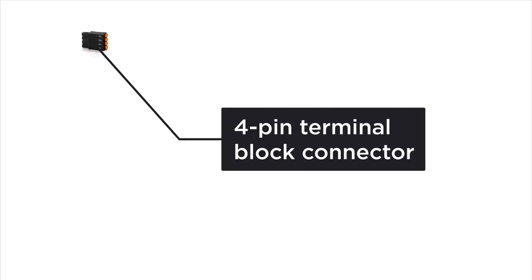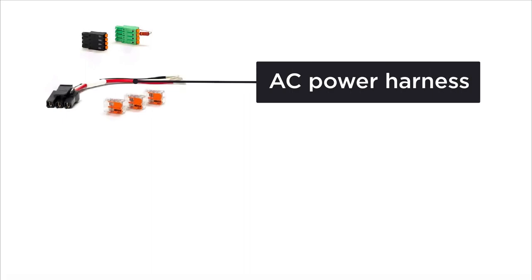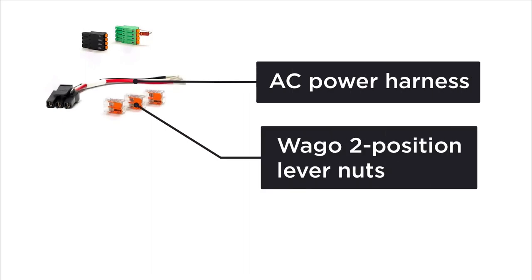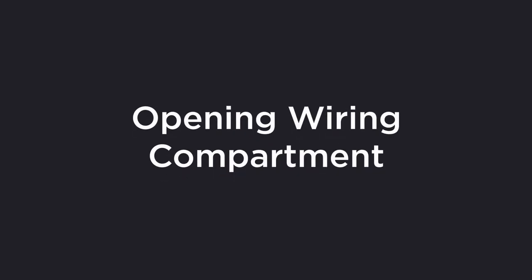Each Powerwall 2 comes with an accessory bag that includes one black 4-pin terminal block connector, one green 4-pin terminal block connector with a 120-ohm terminating resistor, one AC harness with three WAGO two-position lever nuts, and one wiring compartment cover with five screws.